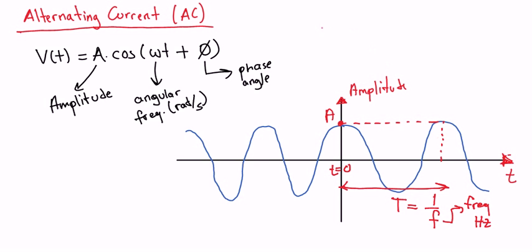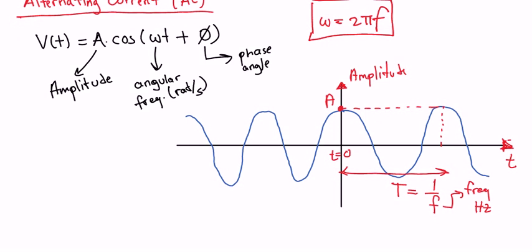And there's also a relationship between this angular frequency and this frequency and we can write it as omega equals 2 pi f. Okay, maybe I should write it here to 2 pi f. Okay, that's much better.